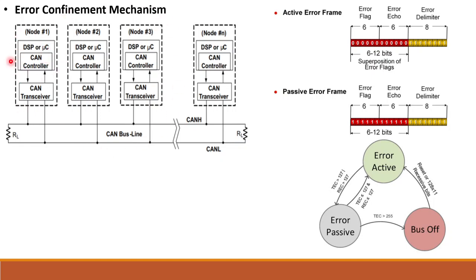Initially the controller is in a normal state. Whenever an error is detected, we enter the Error Active state. We stay in the Error Active state as long as TEC and REC are less than or equal to 127. If TEC or REC is greater than 127, we enter the Error Passive state. When TEC is greater than 255, we enter the Bus-Off state.